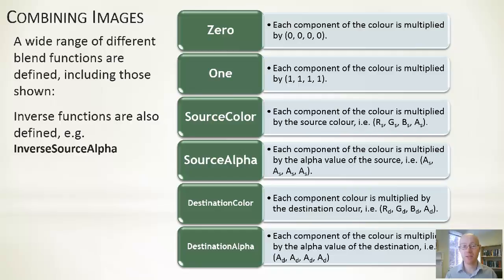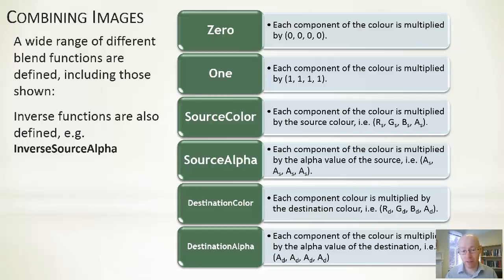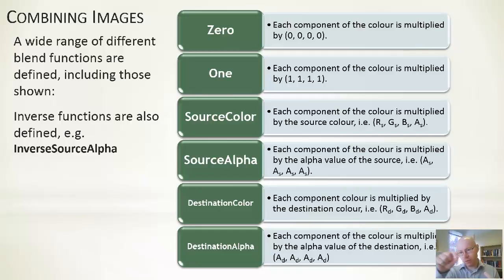Underneath is 1: multiplying the channel value by 1 leaves it unchanged, meaning we use the source or destination unmodified. Then we have source colour and source alpha. Source alpha is one of the more common ones — each component of the colour is multiplied by the alpha value of the source. So the red channel value is multiplied by whatever the corresponding alpha channel value is.